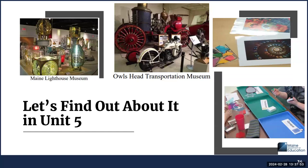Here are some examples of Let's Find Out About It in Unit 5. These activities provide opportunities to deepen vocabulary and concept knowledge. Pictures shown here include examples from museums in Maine for the museum collections activity, as well as examples of stained glass and of exploring transparent, translucent, and opaque objects.